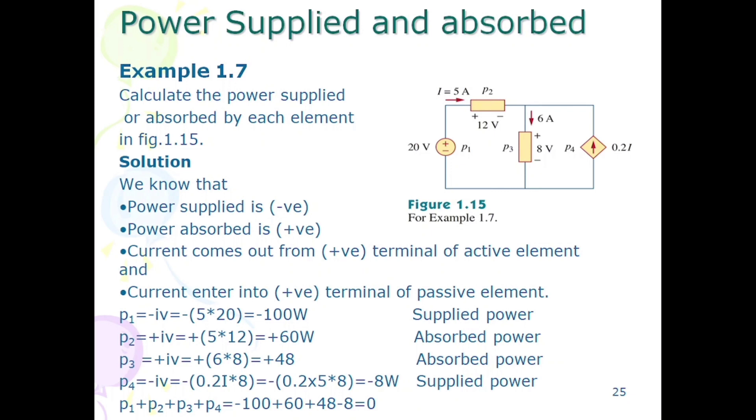For a voltage source, current always comes out of the positive terminal, whereas in passive elements, either it is resistance, inductance, or capacitors, current always enters the positive terminal of that passive element.